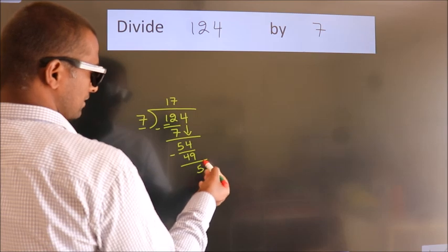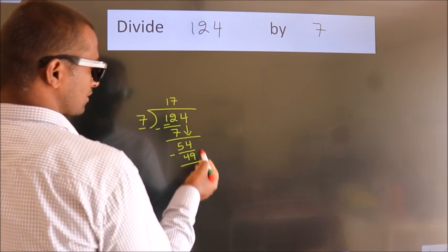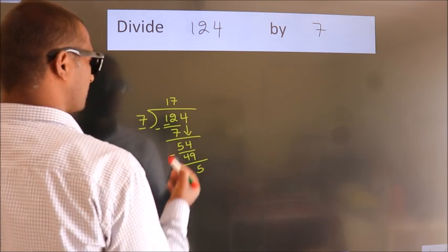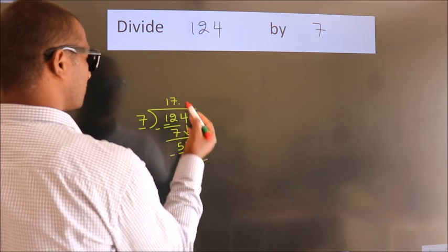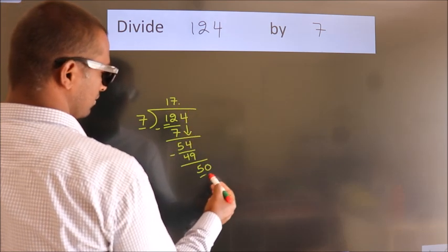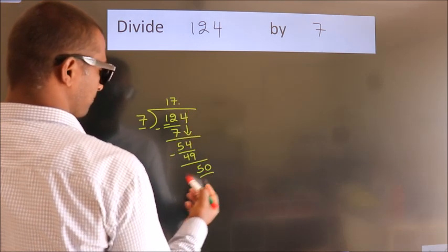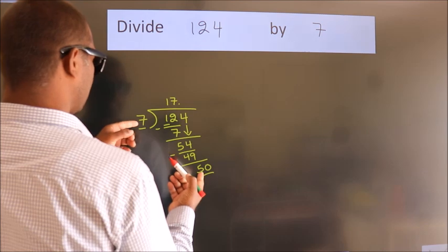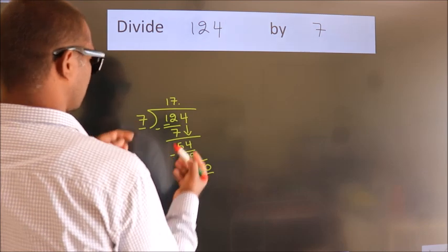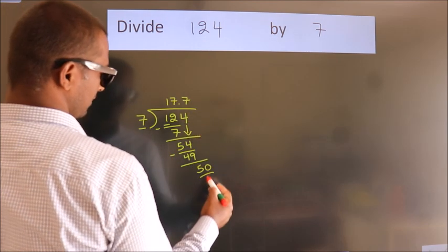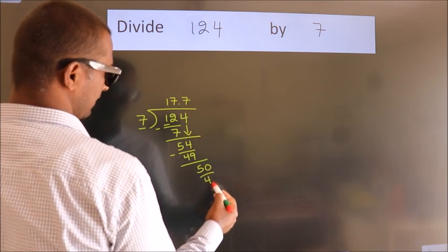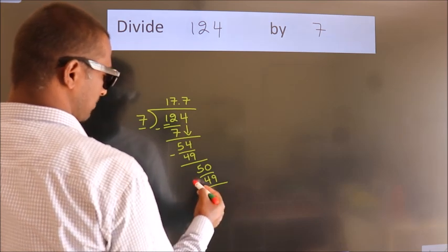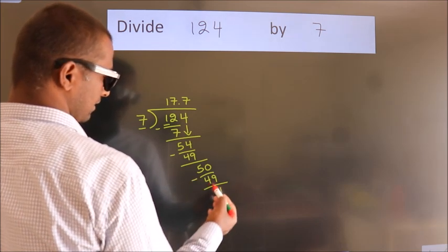After this, there are no more numbers to bring down. So what we do is we put a dot and take 0, giving us 50. A number close to 50 in the 7 times table is 7 sevens, which is 49. Now we subtract and we get 1.